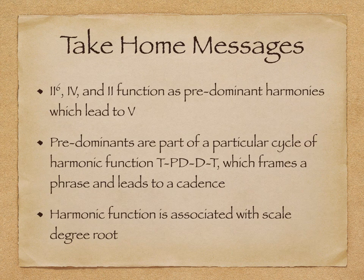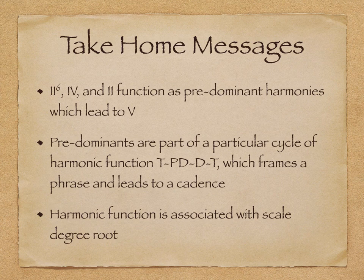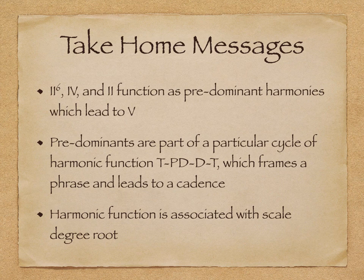From this video we learned 3 new chords — 2-6, 4, and 2 — that function in the bass line as predominant harmonies, which lead to 5. Predominant chords are part of a particular cycle of harmonic function, which we can think of as a hefty sandwich of tonic, predominant, dominant, and then tonic, which often frames an entire phrase and leads to a cadence. An important takeaway from this lesson is that harmonic function is associated with scale degree root and will almost always be found in the prescribed place in the cycle that we have discussed here.